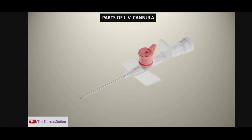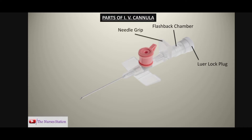Now the parts of the IV cannula. This part is called the lower lock plug, and anterior to it is the flashback chamber. When we insert the cannula into the vein, blood usually comes into this chamber — this is how we know the cannula is properly placed in the vein. After that, there is the needle grip, and then the injection port, which can be used for the administration of drugs directly into the vein.